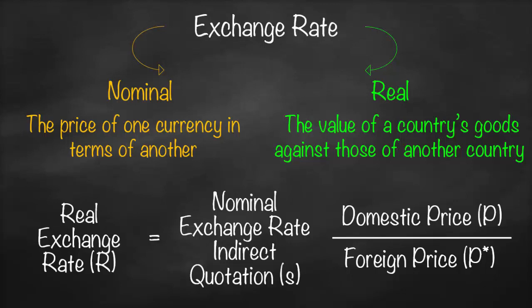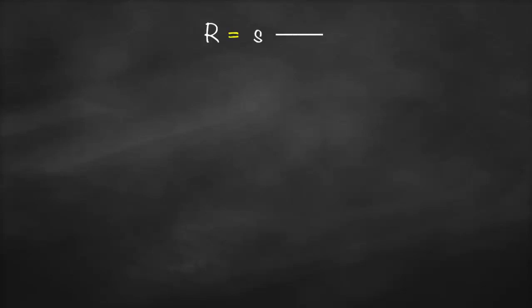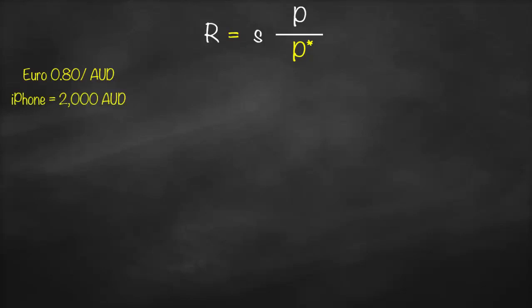The quotation will make a difference in our formula and how we interpret it. In this video, we will stick with indirect quotation. So let's work through an example. We know that the real exchange rate equals the nominal exchange rate (indirect quotation) multiplied by domestic price divided by foreign price (denoted with a star). Let's assume the nominal exchange rate is 0.8 euro per Australian dollar — indirect quotation — and the iPhone in Australia is worth 2,000 Australian dollars, while the iPhone in Europe (Italy) is worth 1,600 euros.